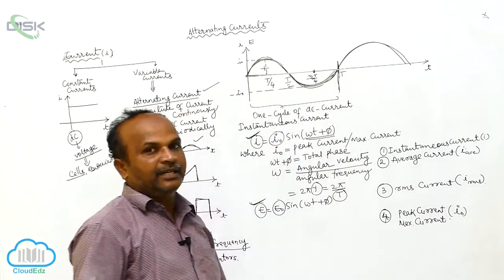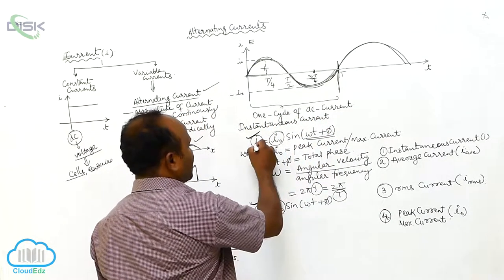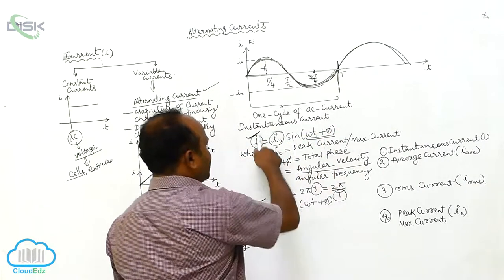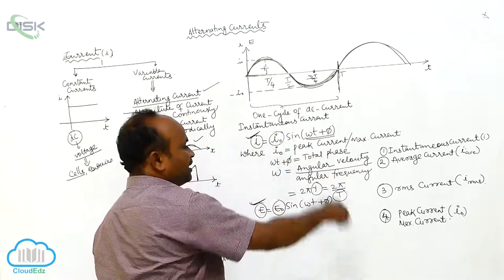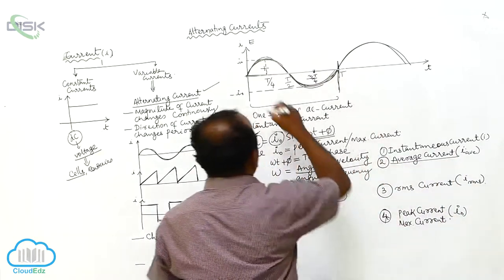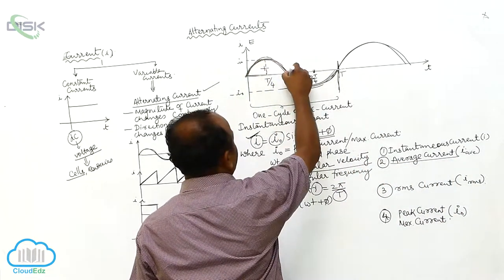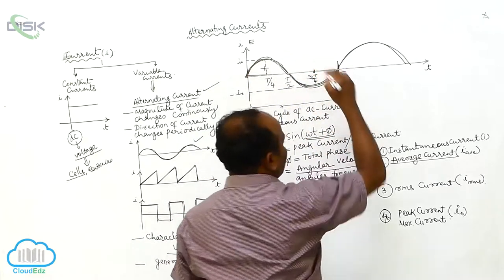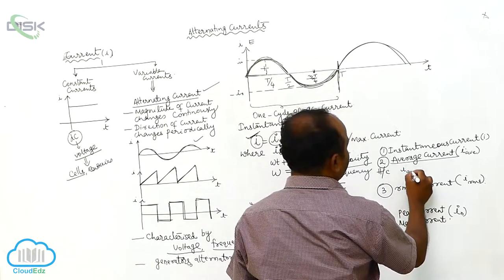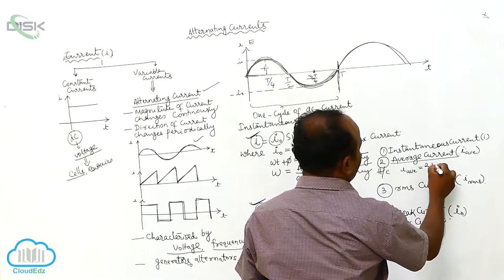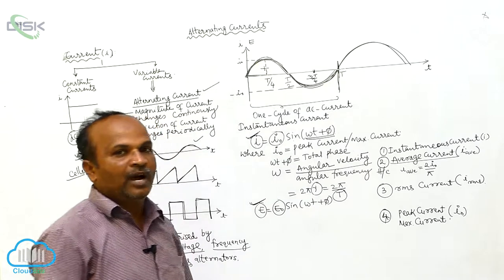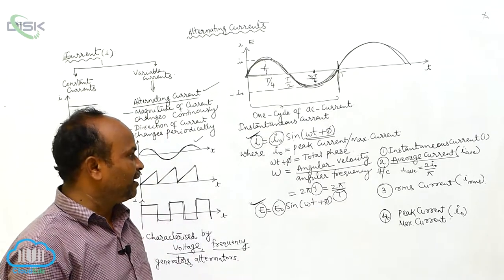The instantaneous current is given by I = I₀ sin(ωt + π), and this I represents the instantaneous current. The average current in the half cycle: I_average is equals to 2I₀ by π.